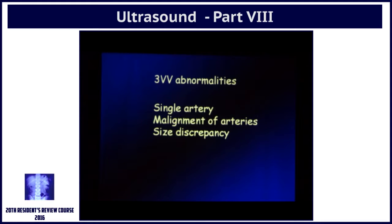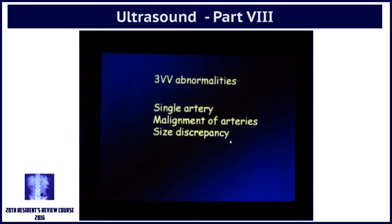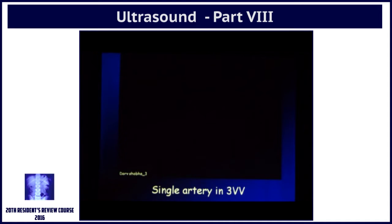In the last two or three minutes, let me quickly cover three vessel view abnormalities. Instead of having three vessels — two arteries and one vein — you can have a single artery and a single vein, you can have malalignment of arteries, you can have size discrepancy. There are many other things that can happen, but I have chosen to show you this example.